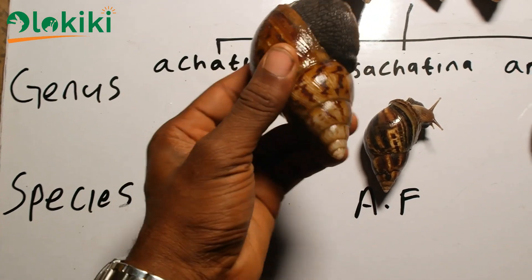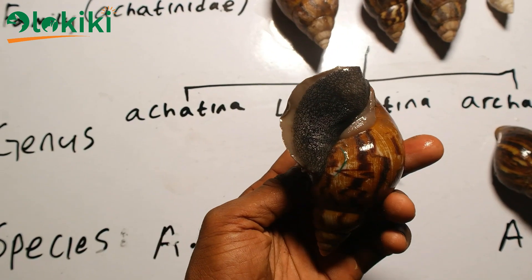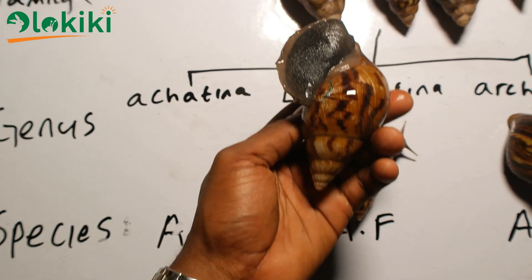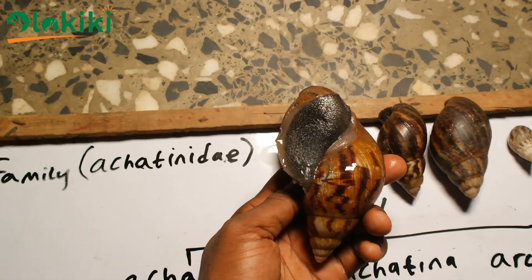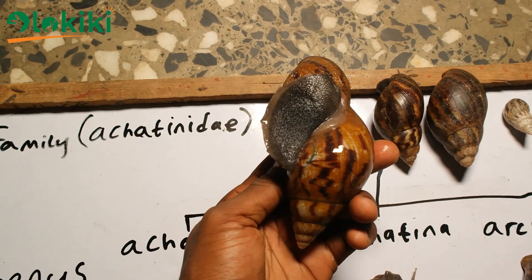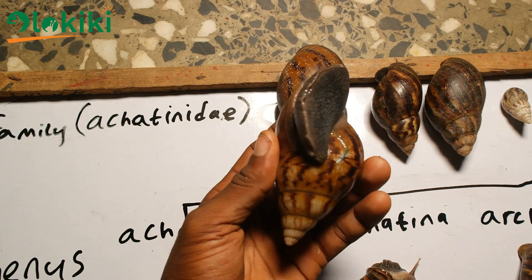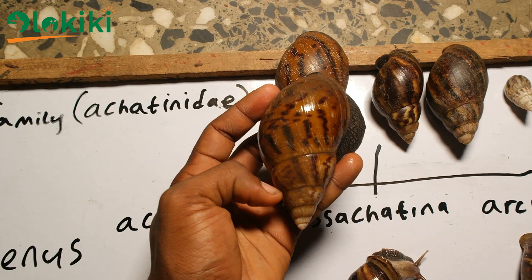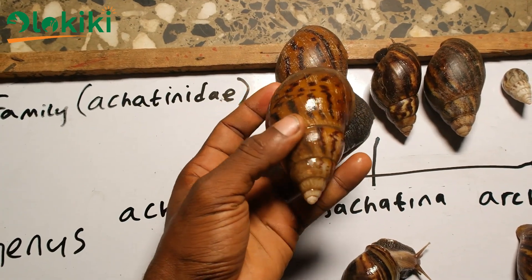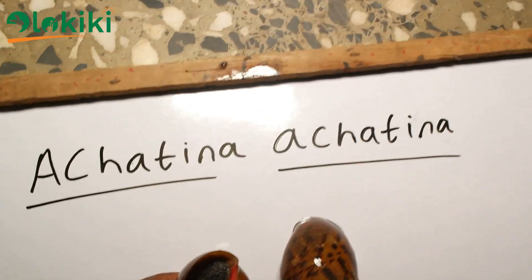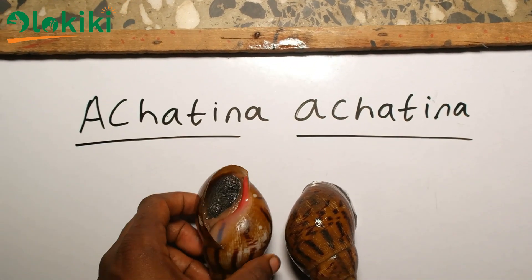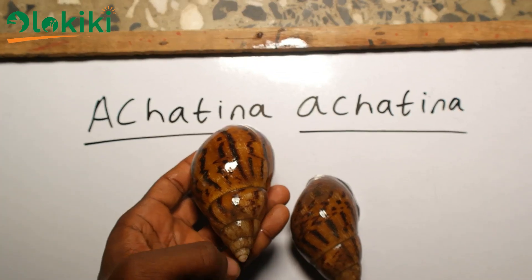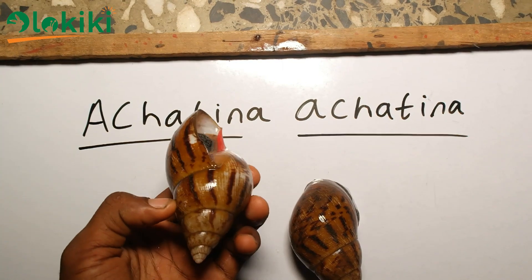This is the point where most people find it so difficult to make a decision on which species of snail to start with. To shed more light on this, let's start with the four species I'm holding right now. Achatina achatina — yes, Ghanaians, I know you're familiar with this one. This snail is popular in Ghana and also native to some West African countries like Sierra Leone, Liberia, Togo, Benin, and also Nigeria.